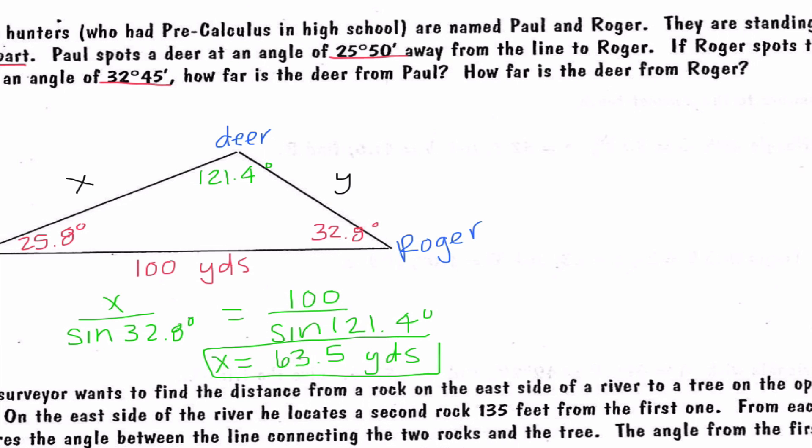Now I also need to figure out how far away is Roger from the deer. So I'm going to go ahead and set up y over sine of 25.8 degrees equals 100 over the sine of 121.4 degrees. And when I put this in, I get that y is equal to 50.9. So I'm going to say 51.0 yards.